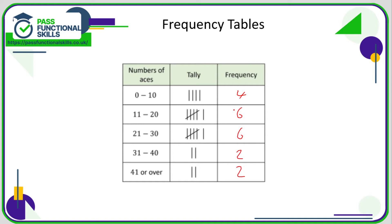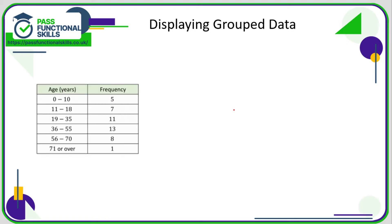When displaying grouped data, the key things to bear in mind are: breaking it down into categories — it's up to you how many categories there are, but you want a manageable number; the categories cannot overlap; and if there is no maximum, the final category needs to be '71 or over' or '71 plus' or whatever starting point you decide for that final category. You might want to have tally marks, and then a frequency number alongside.